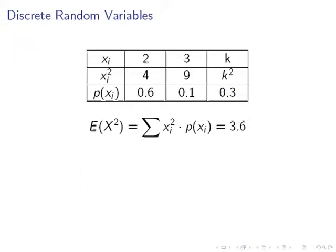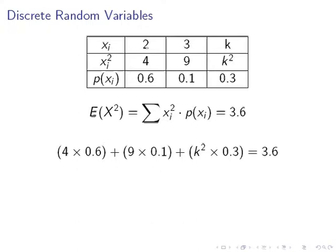Now, what we're going to do is consider how to compute the expected value of X squared. For each squared value, we multiply it by its probability and then sum them all up. So we have 4 times 0.6, the square of 2 times the probability of 2, 9 by 0.1, the square of 3 times the probability of 3, and k squared times 0.3, the square of k times the probability of k. If we add all those numbers together, we get 3.6. This will help us find out what k is.